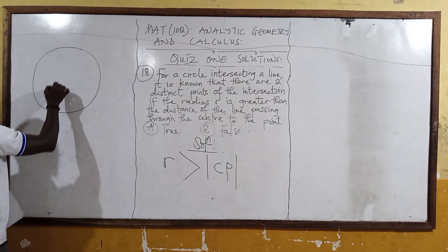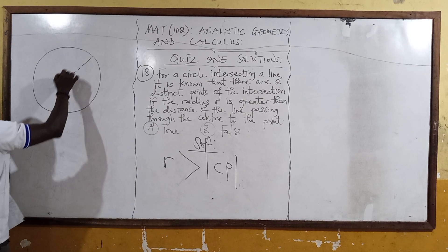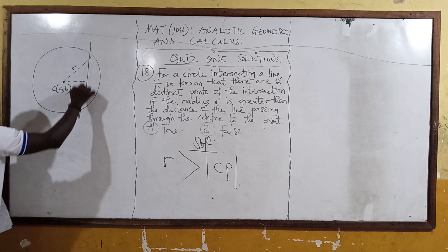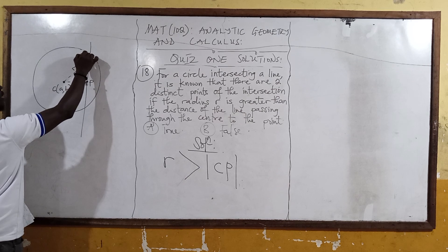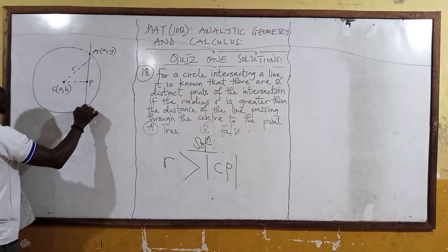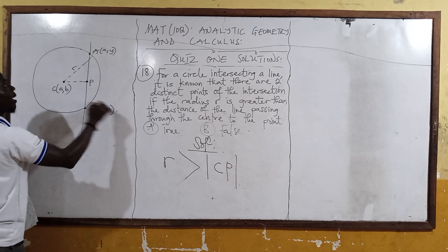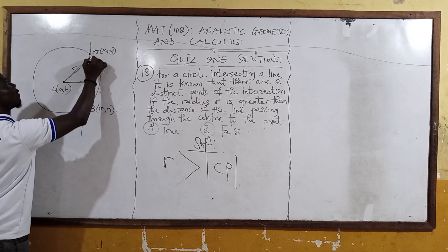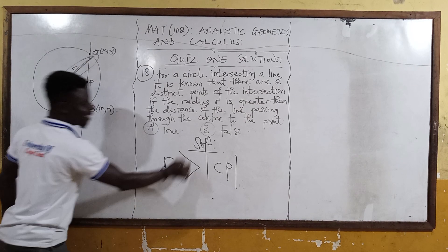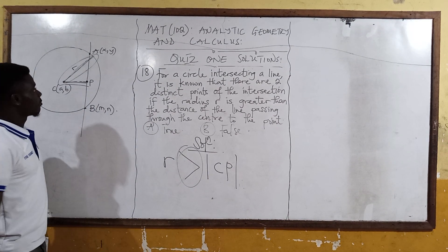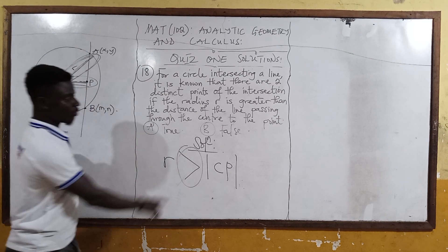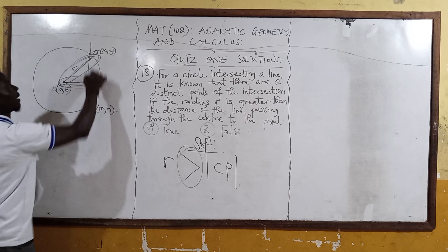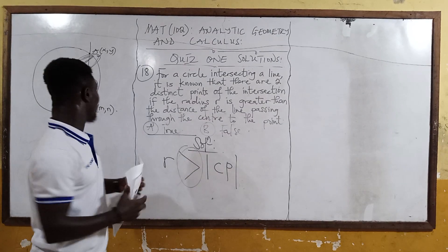Let's draw the circle. We are saying that the radius, from center C to the circle, gives us points. We can get point P here, and points on the line — to XY, point B, and point M. You can see that the length of the radius is greater than the length CD. So now we can say that for a circle intersecting a line, there are two distinct points of intersection, and that is true.